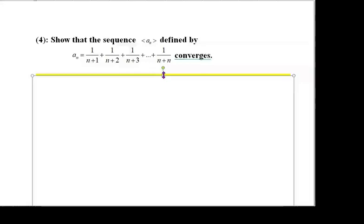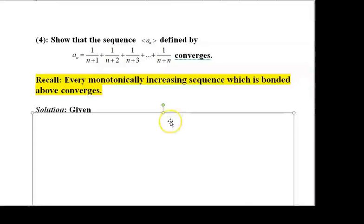To show the given sequence is convergent, we know that every monotonically increasing sequence which is bounded above converges. Therefore, using this result, we will show that the given sequence is convergent.